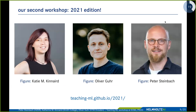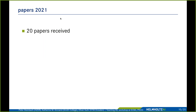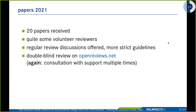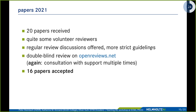Our organizing staff then changed — Katie joined the organizing committee, bringing US representation. Oliver and I remained. We were again successful in applying to ECML — we received 20 papers. We carried over some reviewers and added new ones, held regular reviewing discussions with stricter guidelines, used double-blind review again with OpenReview support, and ultimately accepted 16 papers, now published at PMLR.